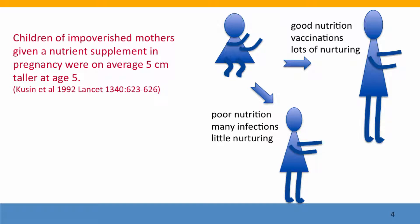When impoverished mothers who were receiving inadequate nutrition were given a nutrient supplement during pregnancy, their children were about 5 cm taller — for Americans, that's about 2 inches taller at age 5.